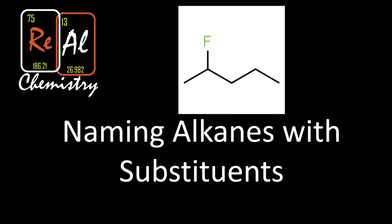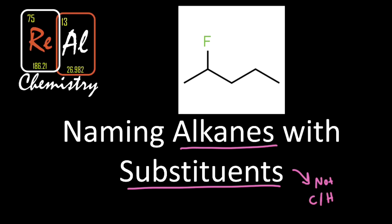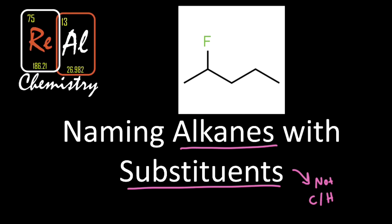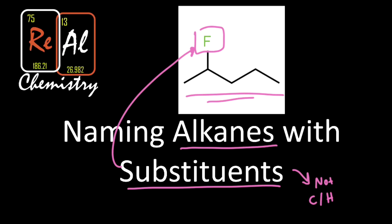What's up everyone, this is Real Chemistry. Today we're talking about naming alkanes with substituents. A substituent is something on our alkane that's not carbon or hydrogen. Looking at the molecule above, the fluorine is the substituent in this case. We care about naming alkanes because if we want to understand more complicated chemistry — like the chemistry in the body with proteins or medicines — we need to start with basic organic chemistry molecules, our building blocks.